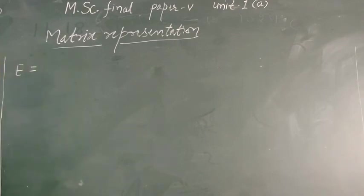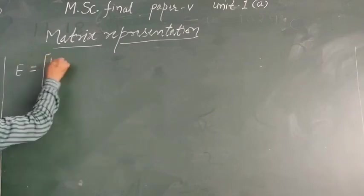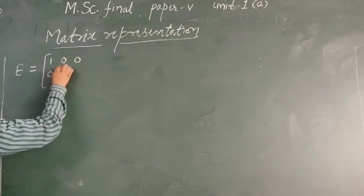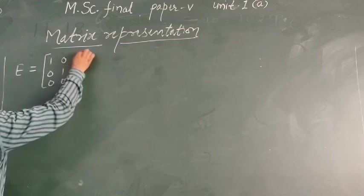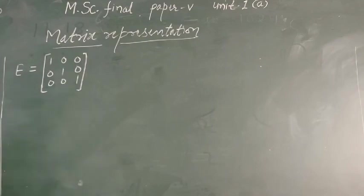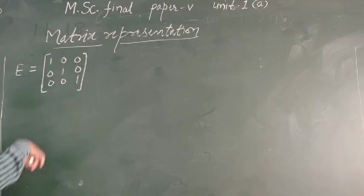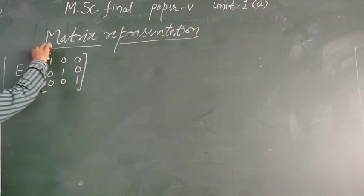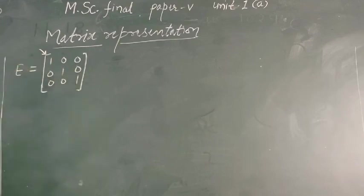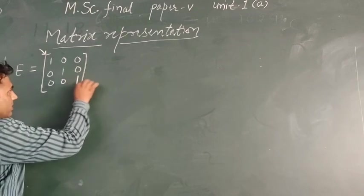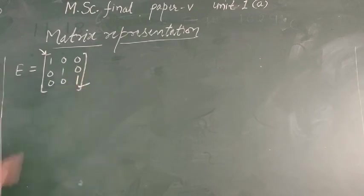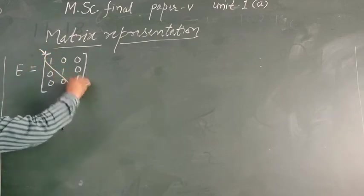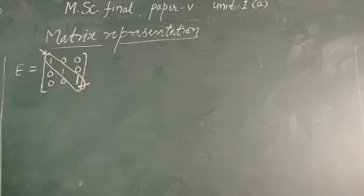The identity matrix came out as: [1, 0, 0 / 0, 1, 0 / 0, 0, 1]. This is how we did the matrix representation for the identity element. The diagonal elements going from top-left to bottom-right are called the elements of the matrix or the trace of the matrix. These are 1, 1, 1. This matrix representation was for the symmetry element identity.